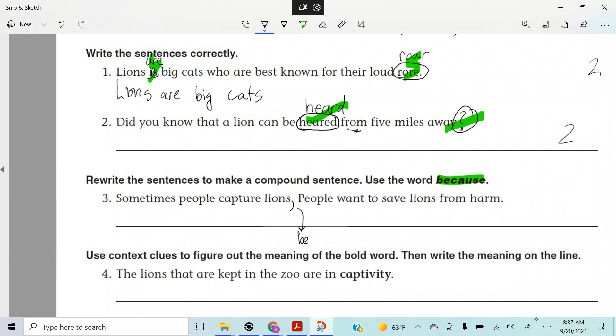All right, so we've got to make a compound sentence. So take a look up here, Chris. It says, sometimes people capture lions. What are we doing? We can get rid of the comma, and we're going to add the word because. Because people want to save lions from harm.